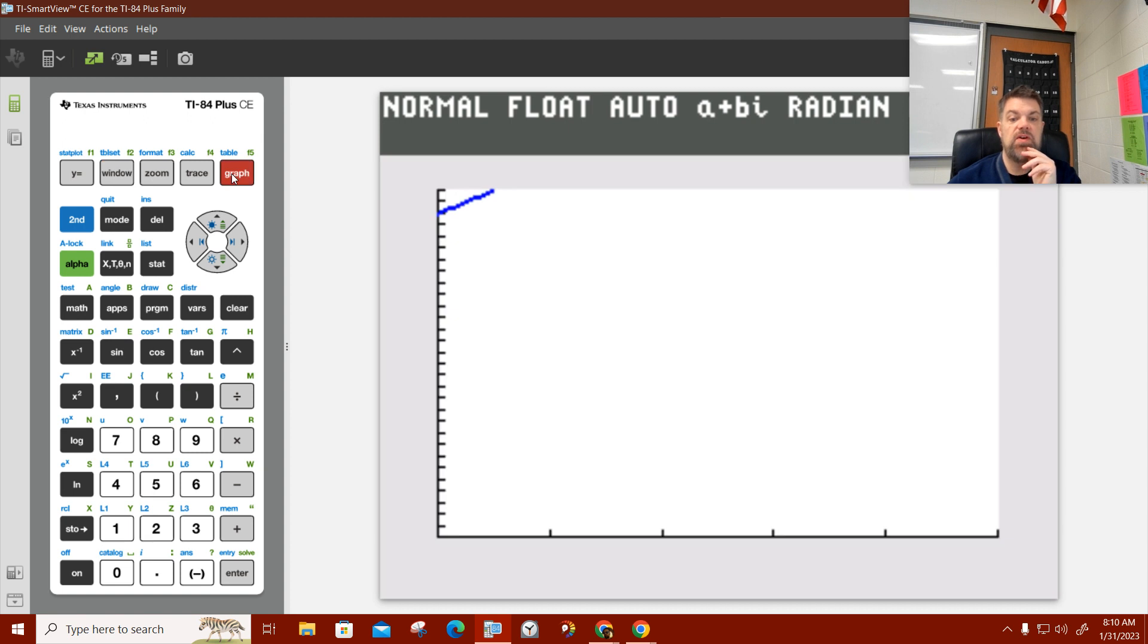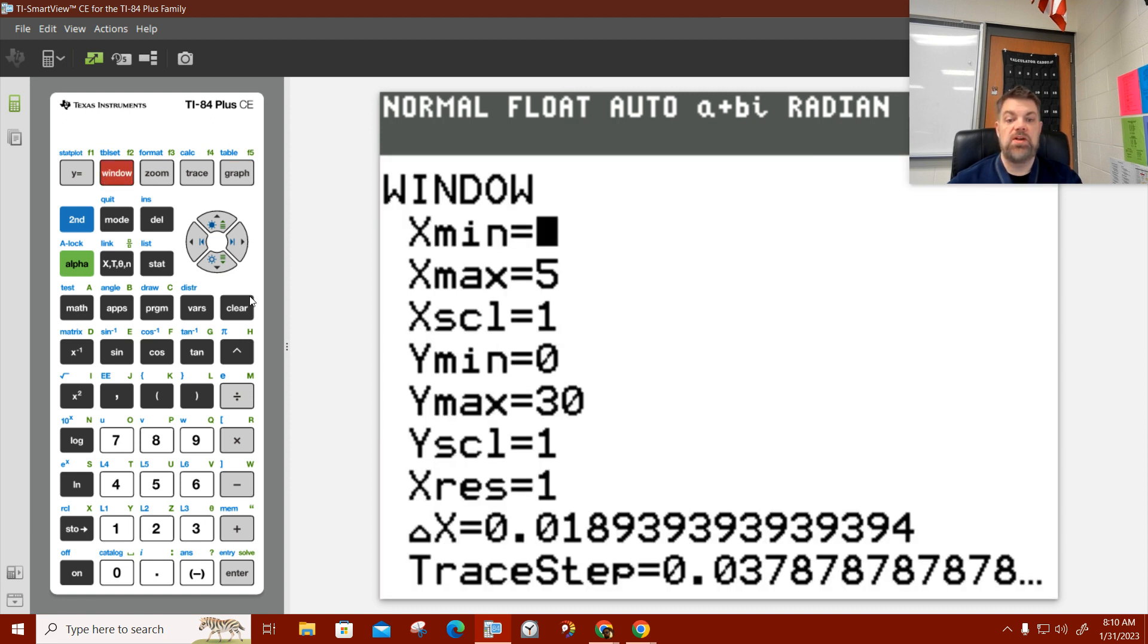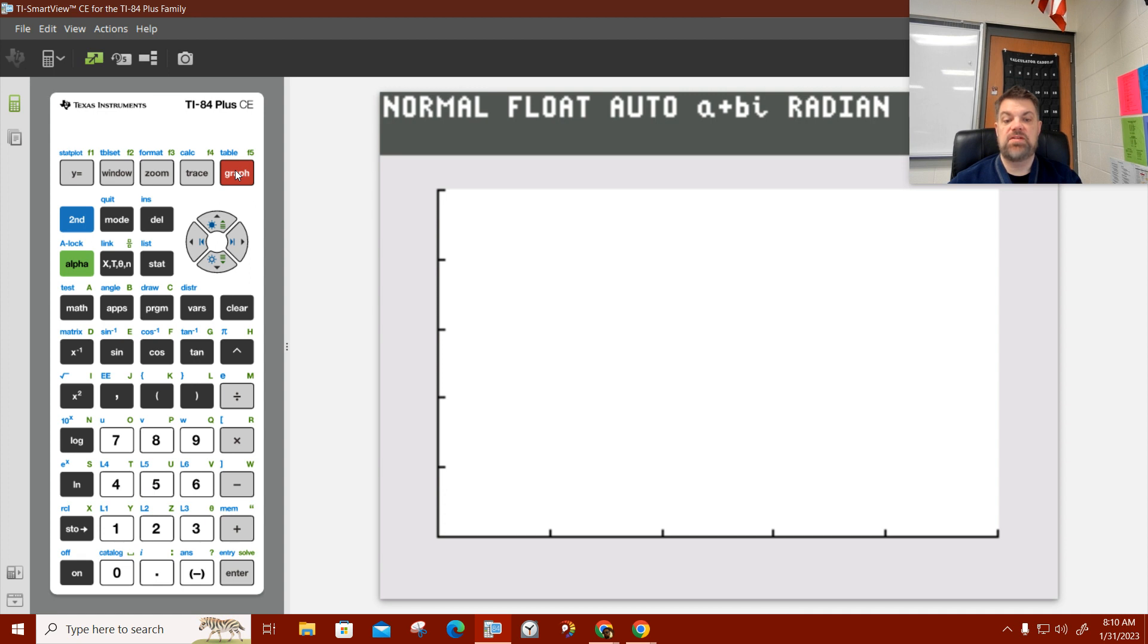So let's go back. Hit graph. Oh, what do I need to do? It looks like it crosses somewhere up here. So what is that? What do I need to change in the window? What goes up? X or y? Y. Y. So my y maximum needs to be what? Increased, right? It needs to be bigger. So go to window. What do you want to change that to? Let's do 50.